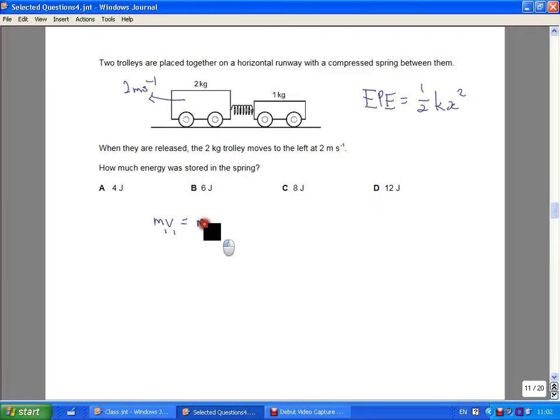M1V1 equals M2V2. This is 2 kg times velocity of 2. This is mass of 1 times velocity of 2. We know that this 1 kg must move to the right with a velocity of 4 meters per second. V2 equals 4 meters per second.